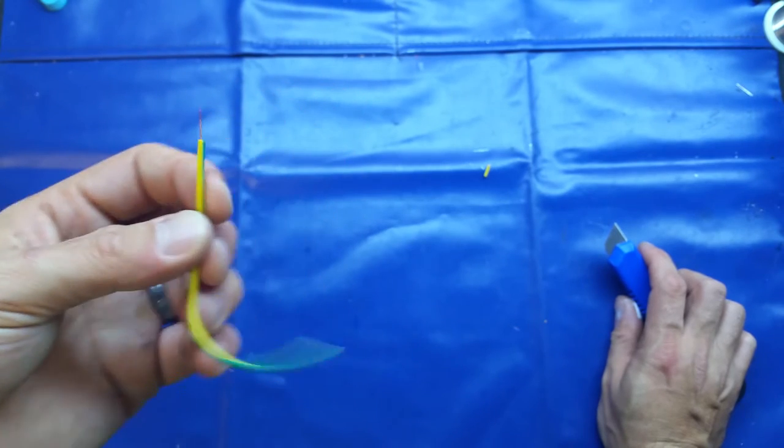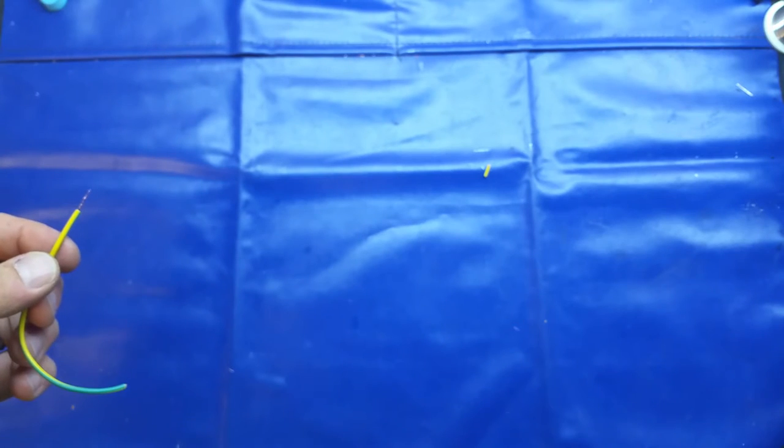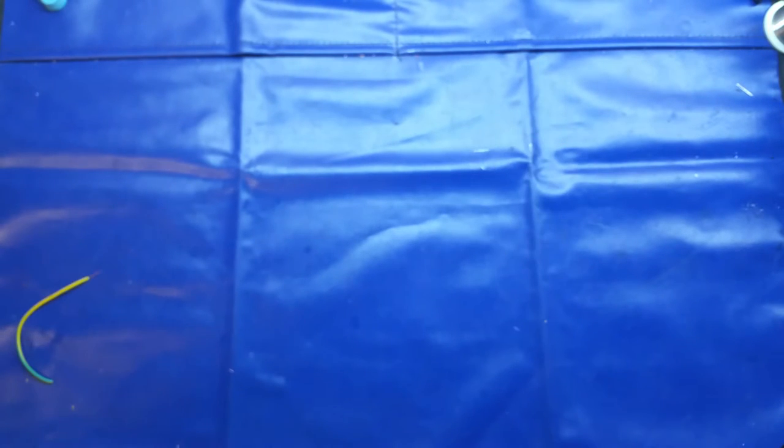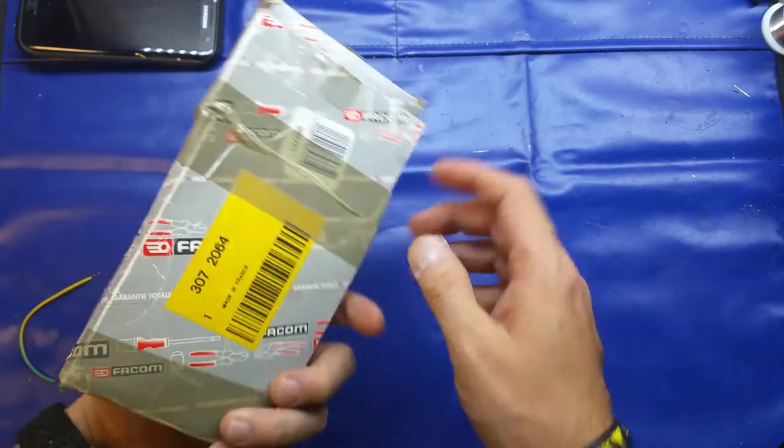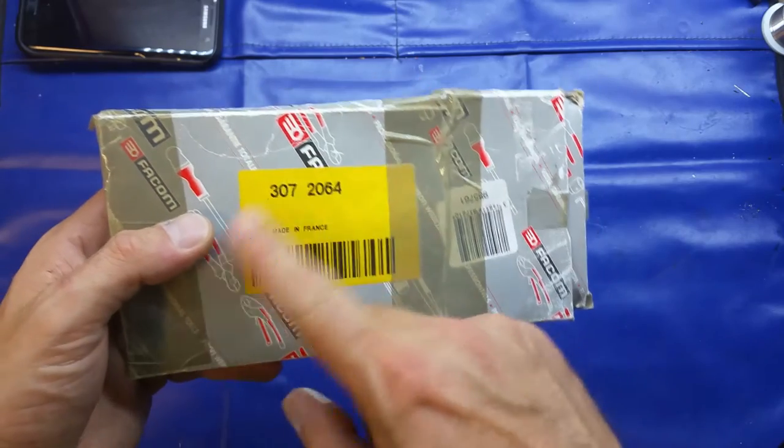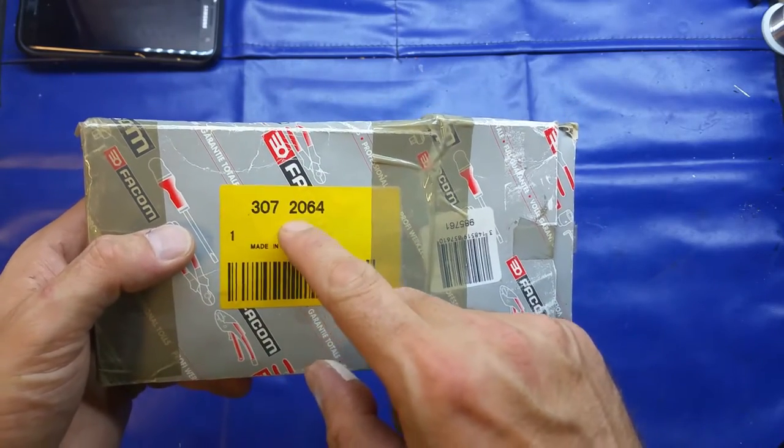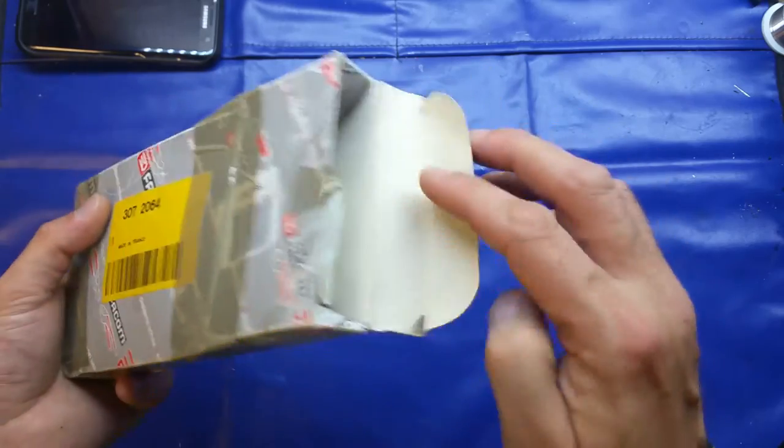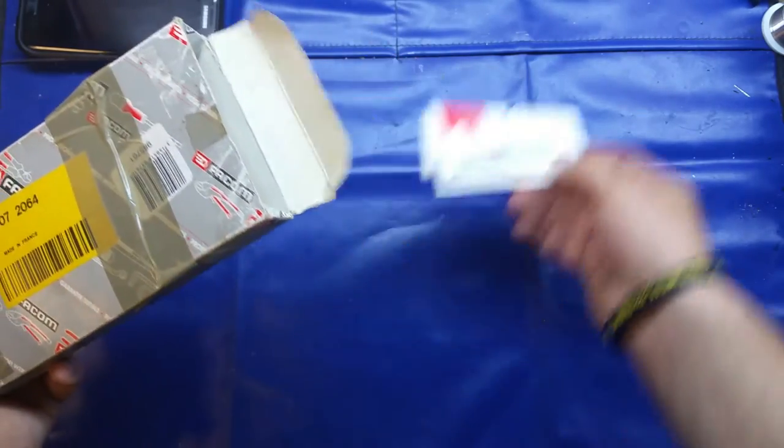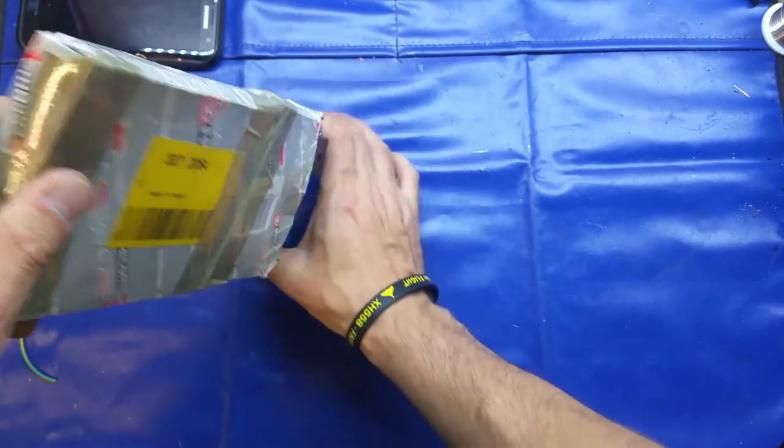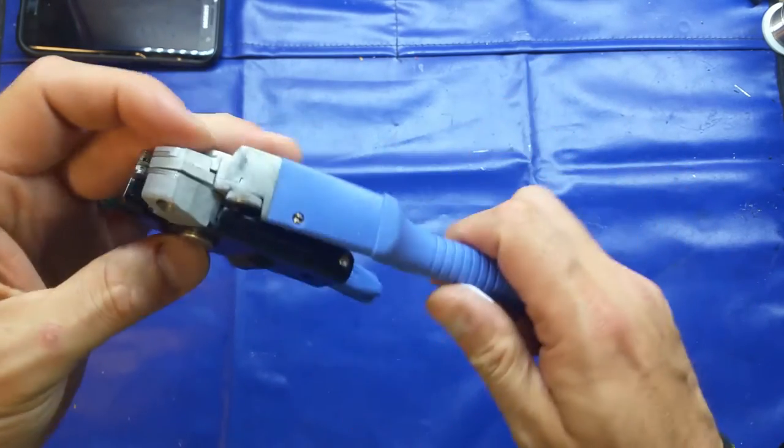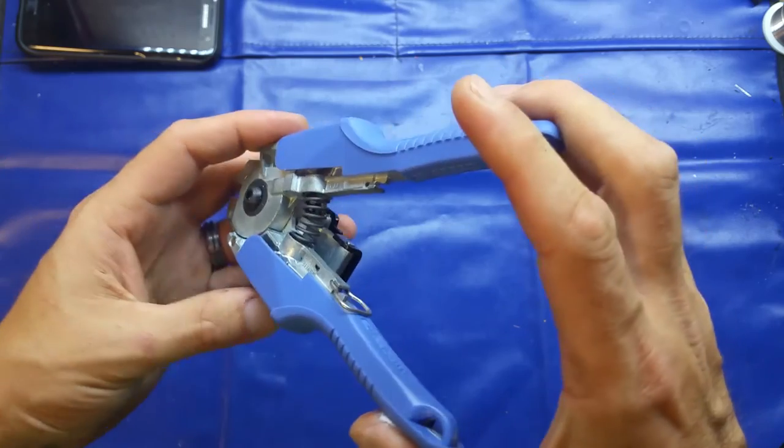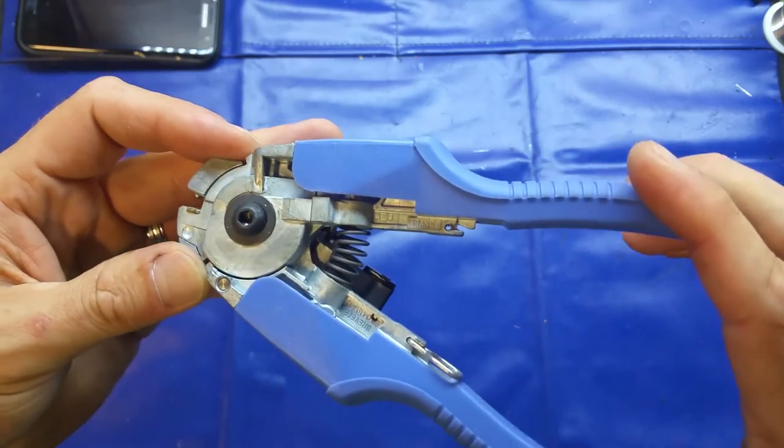I thought I'd show you the wire strippers I use, the particularly good ones, and it's these FACOM or FACOM 162 PBs. This is the box they come in, available from RS Components with the yellow and black label, catalog number 307-2064. Here are the strippers themselves, as you can see quite nice quality cast aluminum. They're an engineered product, nicely designed.